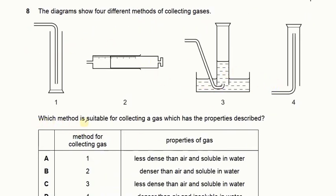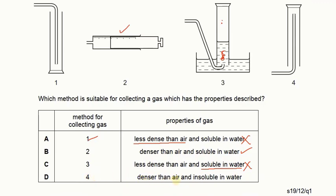We have four diagrams. Method 1 cannot be used for a less dense gas because we are delivering the gas downward — this method is for heavier gases. Method 2 can be used for a gas that is denser than air and soluble in water because a gas syringe can collect any gas whether soluble, insoluble, lighter, or heavier. Method 3 cannot be used for a gas soluble in water because the gas will dissolve and not be collected. Method 4 with upward delivery is suitable for lighter gases, not denser gases. So the answer is B.